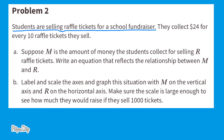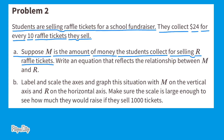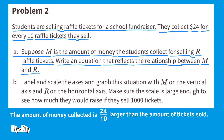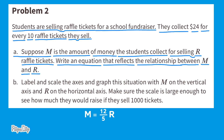Problem number 2. Students are selling raffle tickets for a school fundraiser. They collect $24 every 10 raffle tickets they sell. Part A: suppose M is the amount of money the students collect for selling R raffle tickets. Write an equation reflecting the relationship between M and R. The amount of money collected is 24/10 — or simplified to 12/5 — times larger than the number of tickets sold. The equation is M equals 12/5 times R.